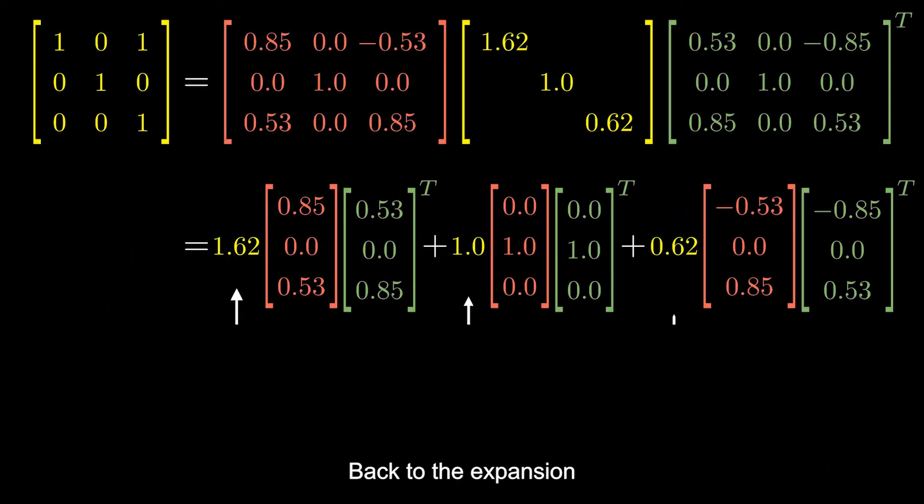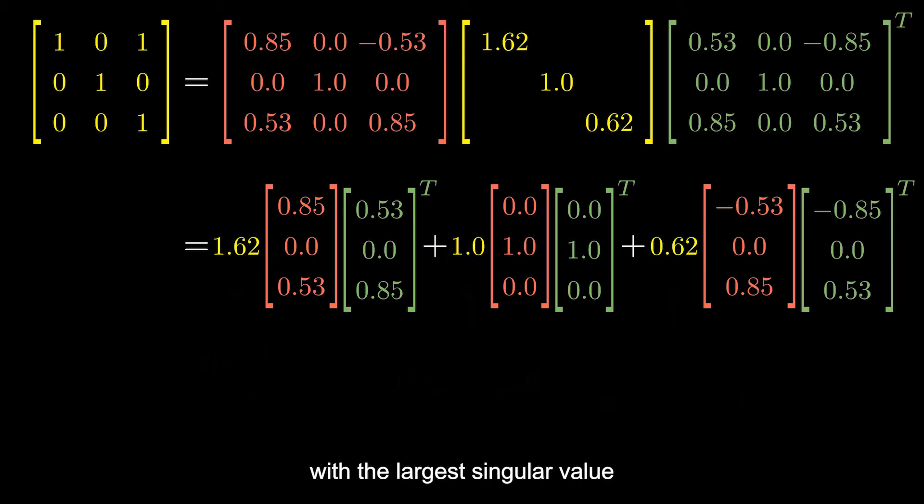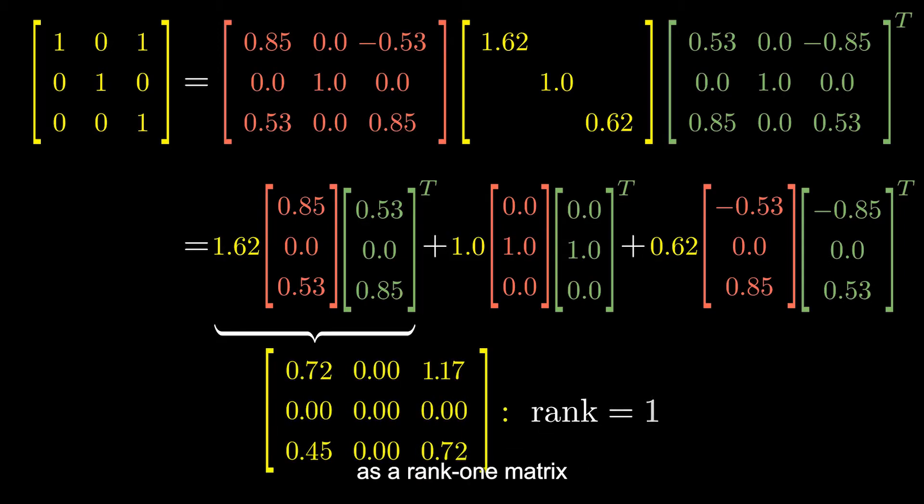Back to the expansion, the magnitude of a singular value indicates how important this rank-1 matrix is as a part of the original matrix. So, the first term, with the largest singular value, is surprisingly close to A as a rank-1 matrix.